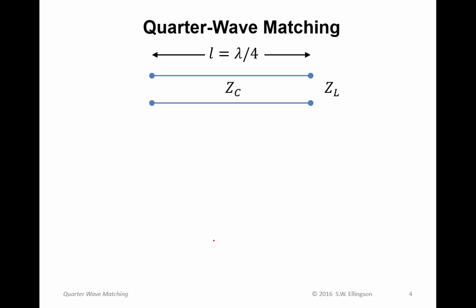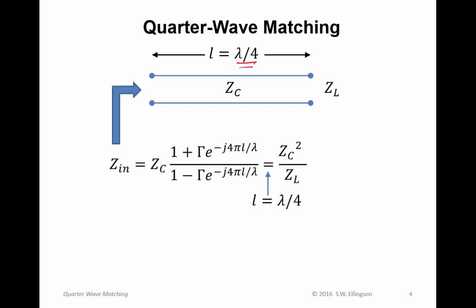Quarter wave matching uses quarter wavelength sections of transmission line. So the length of the transmission line will be lambda by 4. And so using our expression and substituting lambda by 4,